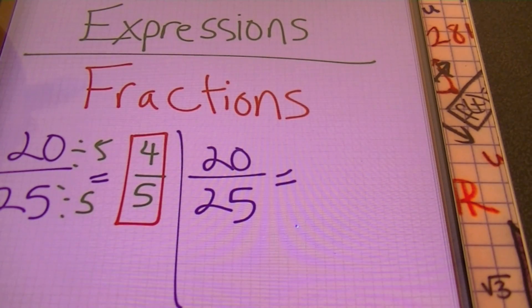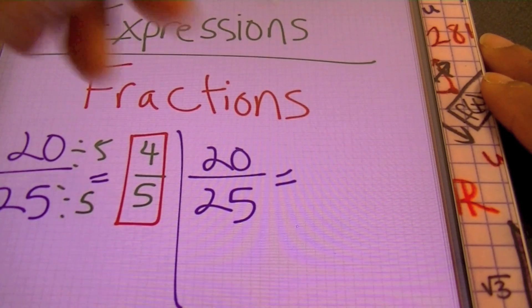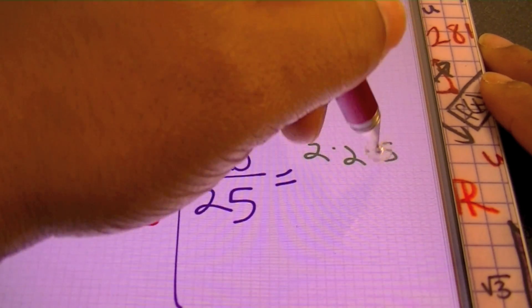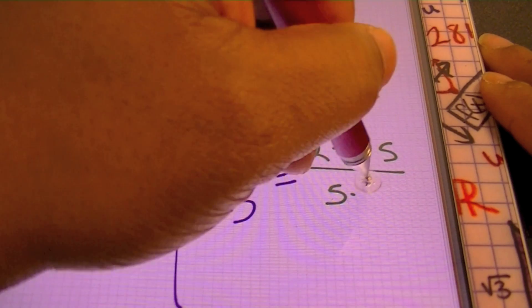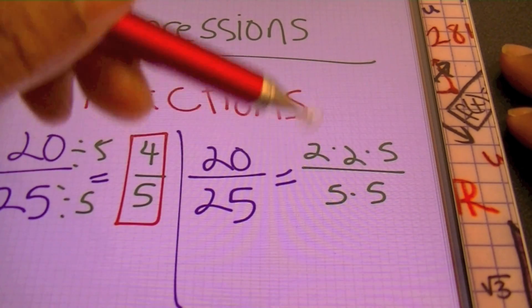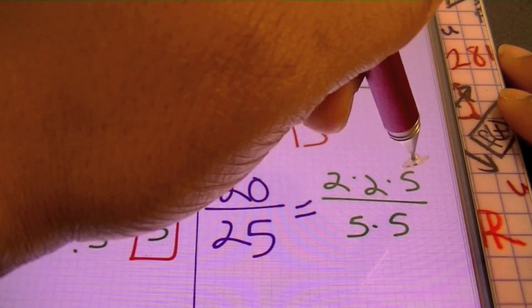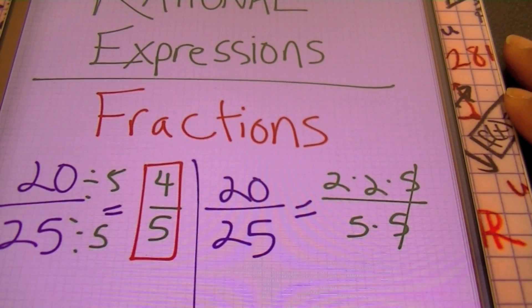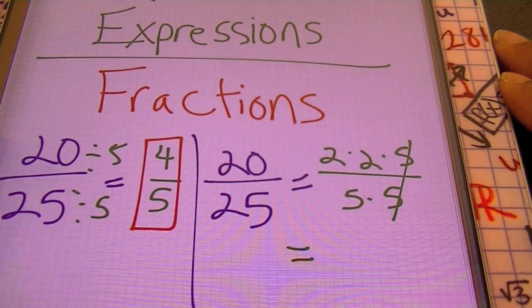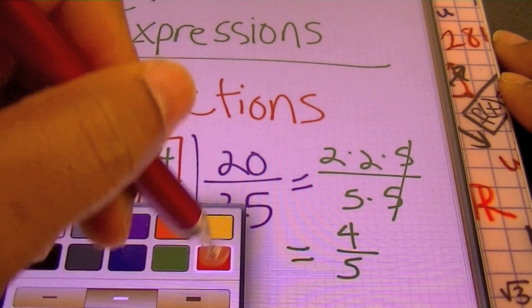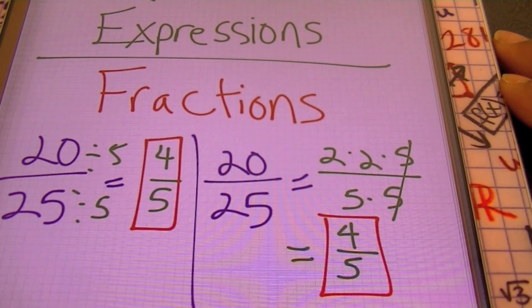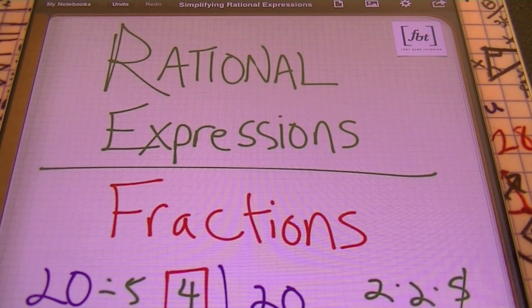Another way to show this is using prime factorizations. 20 is made up of two times two times five, and 25 is five times five. Anytime you have a number over itself, you can simplify it. So these fives will cancel out because anything over itself is one. Multiplying the numerator together — two times two gives me four — and I only have that five in the denominator. So once again, I have four fifths as the result. Those are the techniques we'll use when dealing with rational expressions.